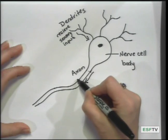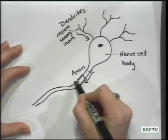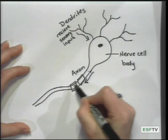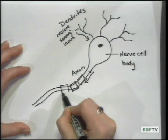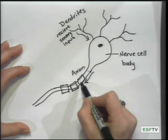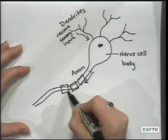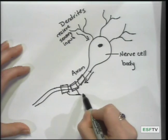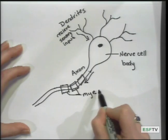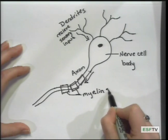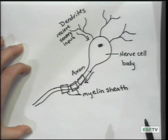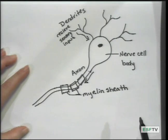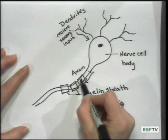Along the axon, there are structures that shield and protect the axon. This is called a myelin sheath. These myelin sheaths are produced by glial cells, or supporting cells.